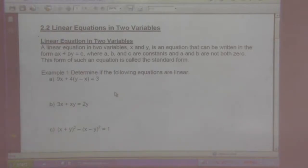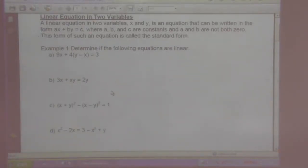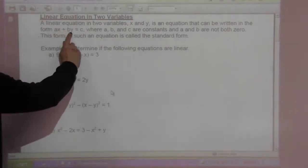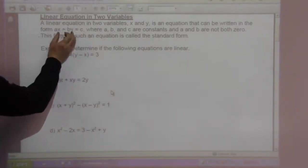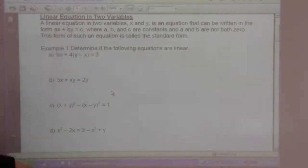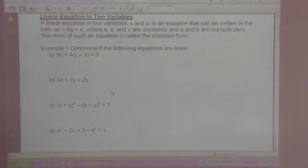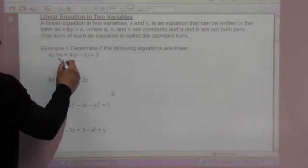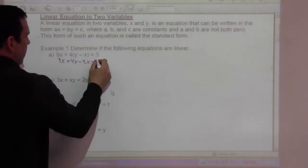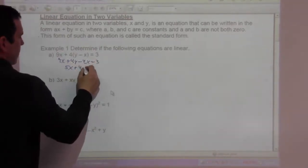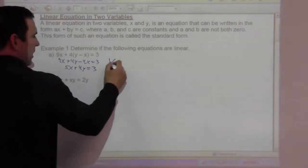Example 1: Determine if the following equations are linear. The point is that x and y are to the first power. If they're squared or to the third power or fourth power, or even negative first power, it's not going to be linear. In this case, 9x + 4y - 4x = 3, which simplifies to 5x + 4y = 3. Yes, this is a linear equation.